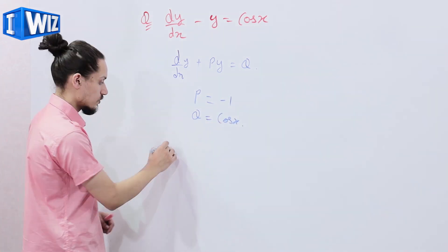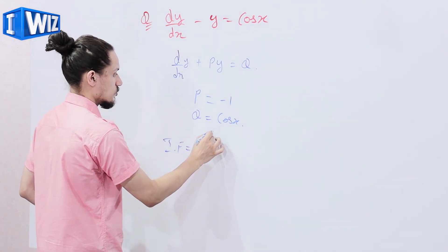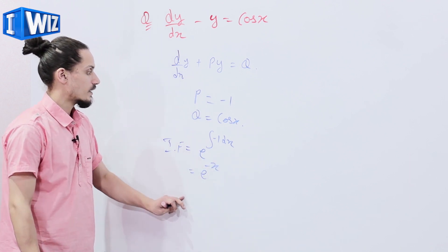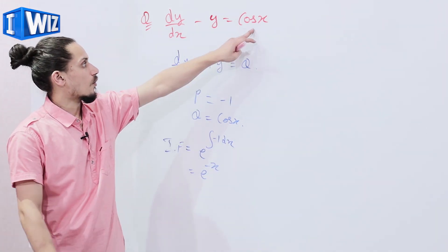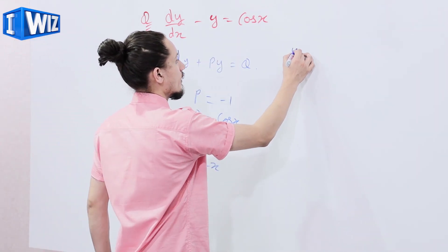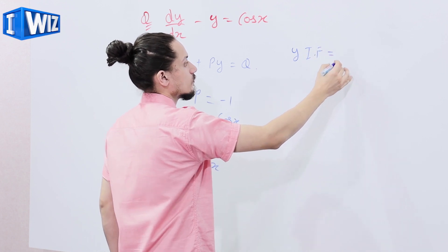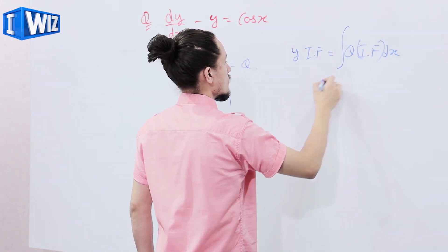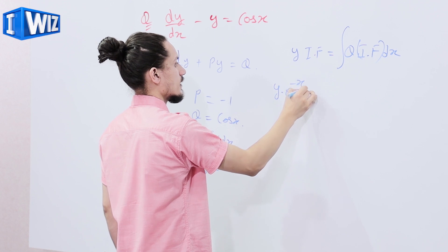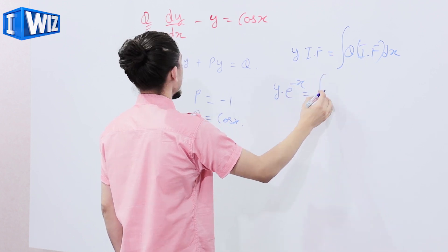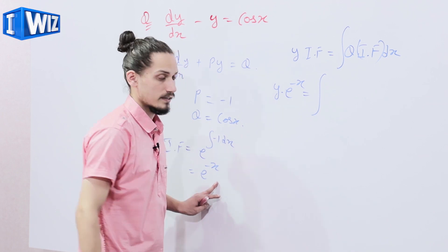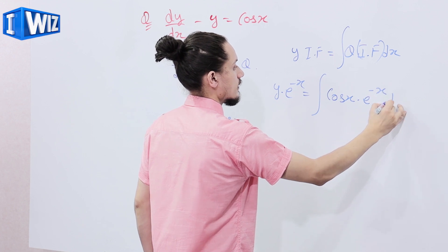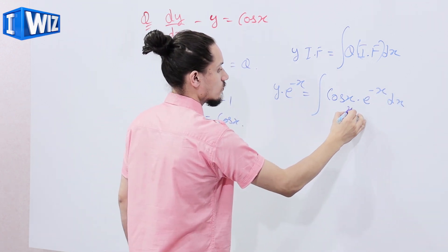Next, finding the integrating factor: IF = e^(∫-1 dx) = e^(-x). So the solution of this equation will be y·(IF) = integral of q·(IF) dx, which gives y·e^(-x) = integral of cos(x)·e^(-x) dx. Let's call this integral I.